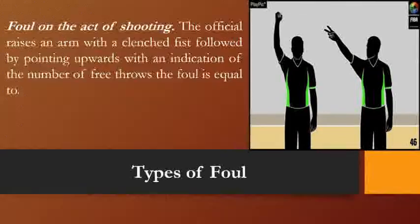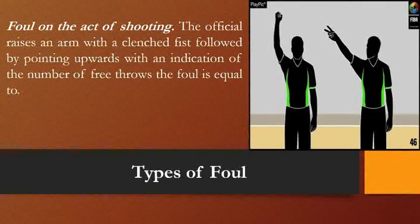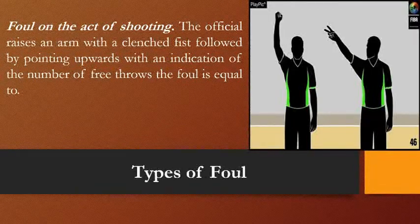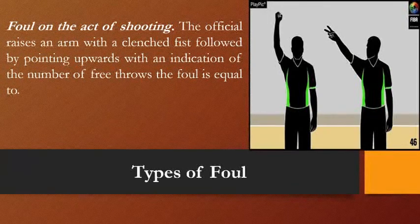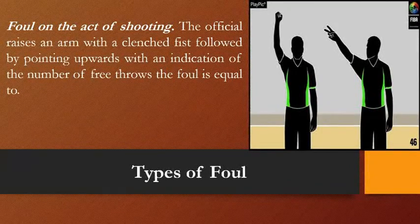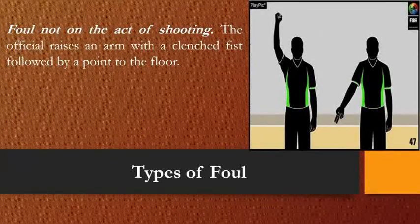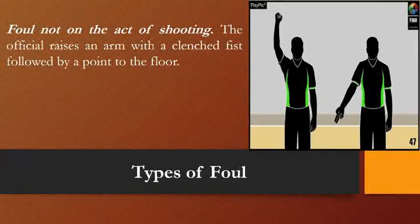Another type of foul is foul on the act of shooting. The official raises an arm with a clenched fist, followed by pointing upward with an indication of the number of free throws the foul is equal to. The referee signals a clenched fist and then points to the basket to indicate whether it is a one-, two-, or three-point foul in the act of shooting. If the foul is not on the act of shooting, the official raises an arm with a clenched fist and points to the floor, meaning the foul happened before the shot was taken.